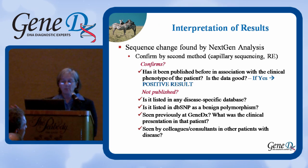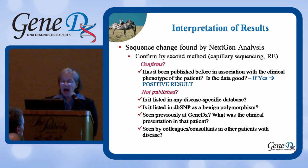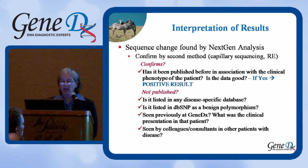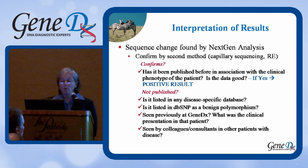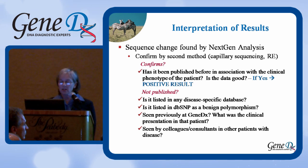We look to see if the mutation has been listed in any of the disease-specific databases, and there are many. Dr. Priori's here is one I depend on greatly. We look in DBSNP, which is a government-supported database of benign polymorphisms — it's not a very clean database, but it's a database. We determine whether or not we've seen this before at GeneDx, if it's in our own clinical experience, and in that case, was it the same clinical presentation as in the previous patient?